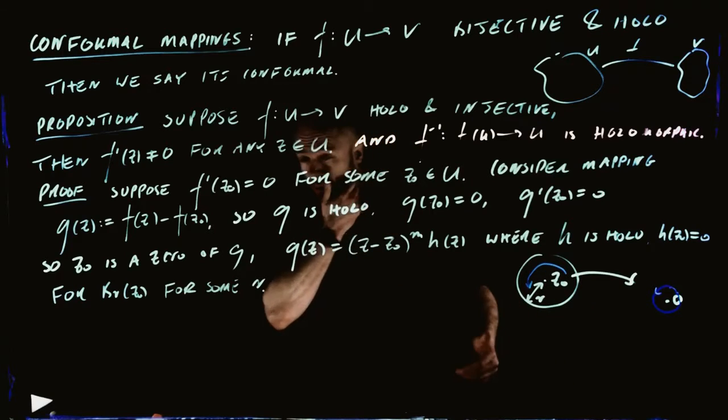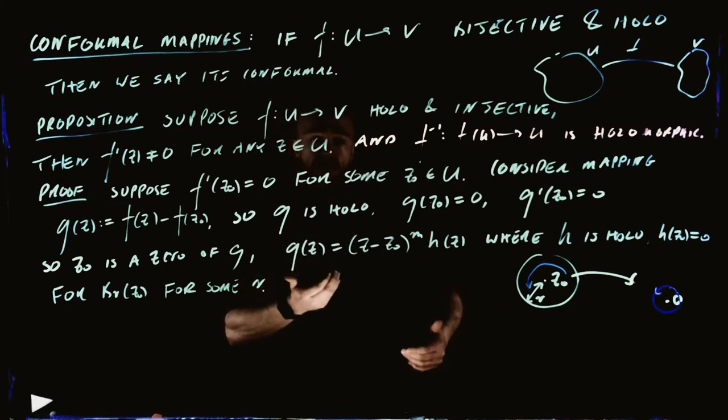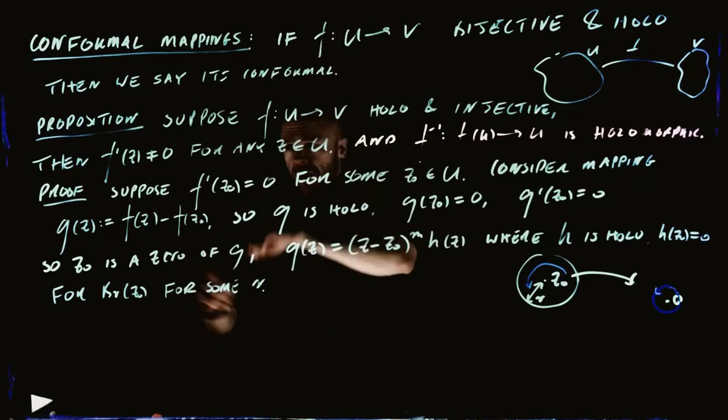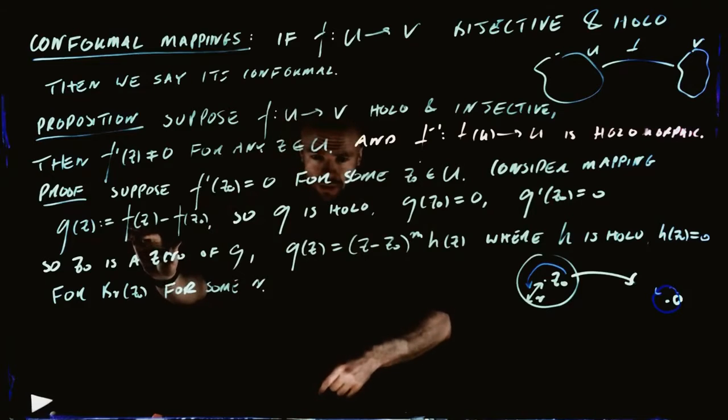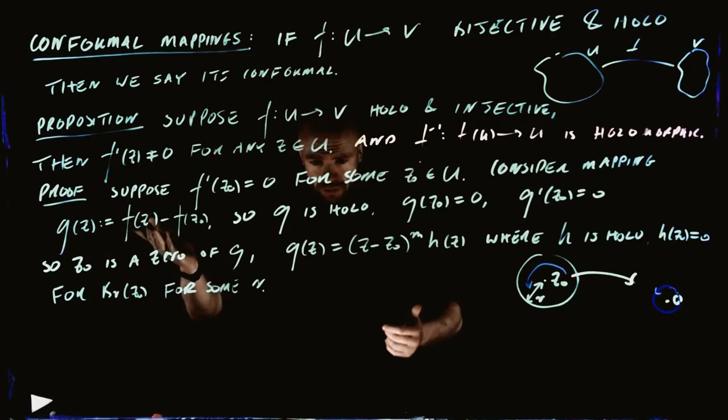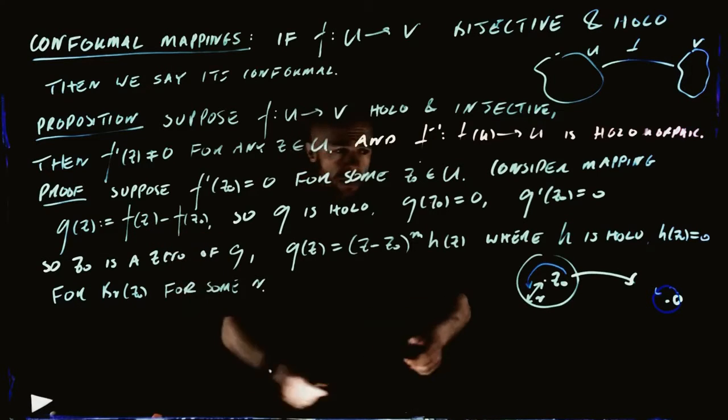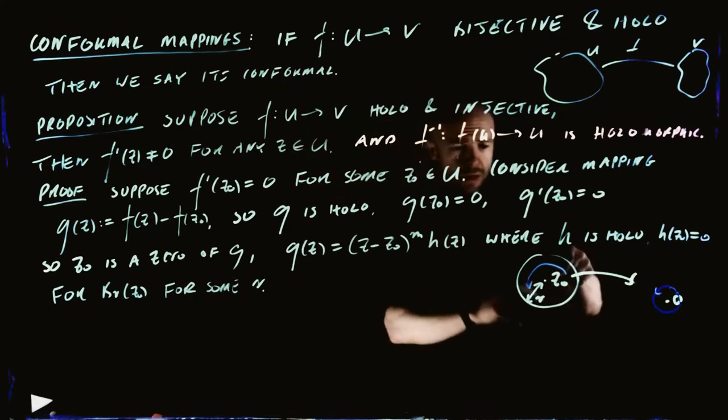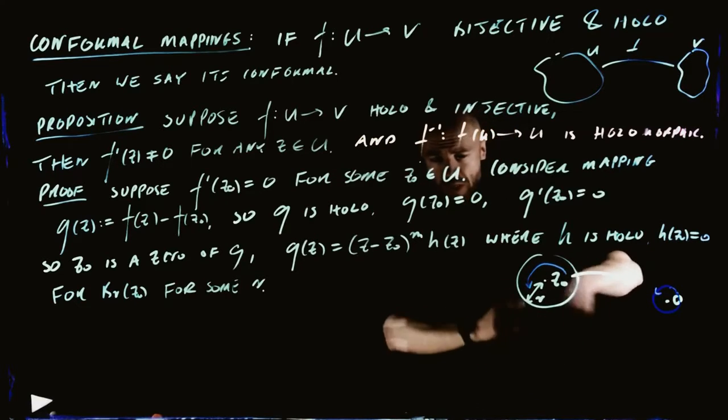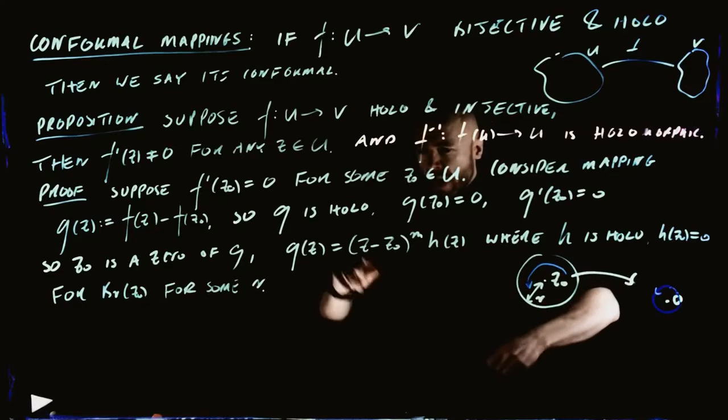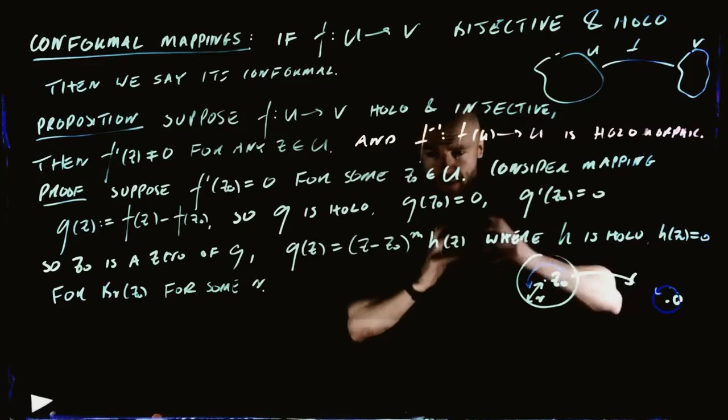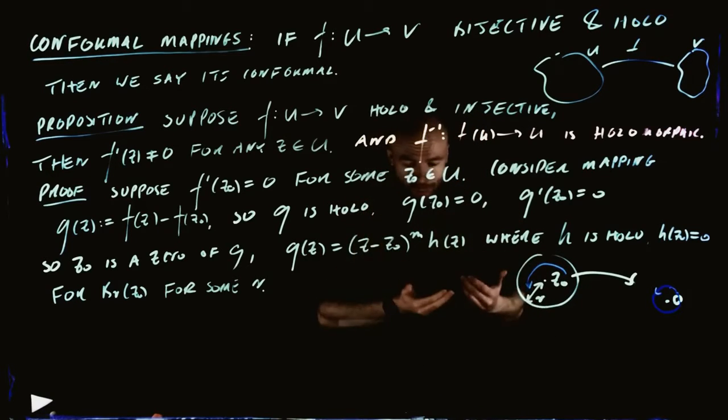We would expect this to be true, that this theorem is true, because if we had a point where the derivative was 0, then we can create this function, which is the same as F, we're just shifting it by some particular constant. And if we look locally, it's taking the ball around Z0 and wrapping it around itself at least two times, however many M is. Which doesn't look like injective behavior at all.